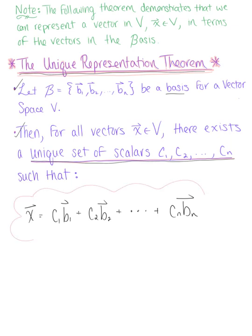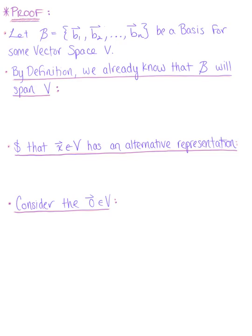So we need to now go ahead and prove this — the proof for the unique representation theorem. We begin by letting b be the set of vectors b sub 1 through b sub n, a basis for some vector space v. Then by definition, we already know that b is going to span the vector space.